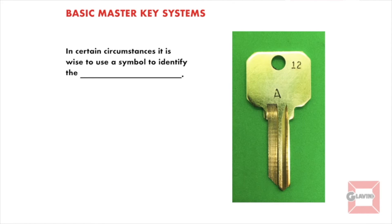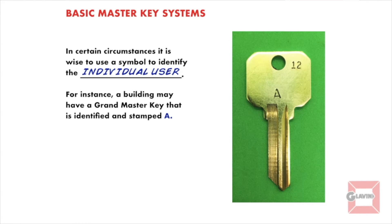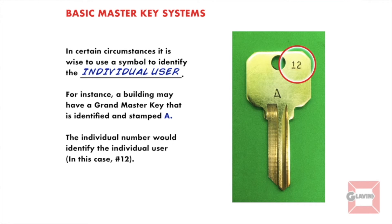In certain circumstances it's wise to use a symbol to identify the individual user for that key — the person this key has been assigned to. For instance, a building may have a grand master key that is identified and stamped A. The individual number would identify the individual user, in this case number 12.